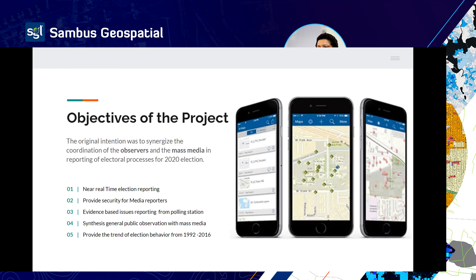We also wanted to sanitize general public observation with the mass media — the public has information that media agents may not have, so we wanted to create a system where the mass media can take information from the general public and infuse it with their own reports. Additionally, we wanted to provide a trend election behavior system, using past voting behavior in various locations to project what is likely to happen or see changes that have occurred over time.